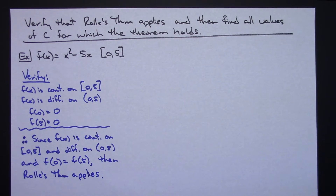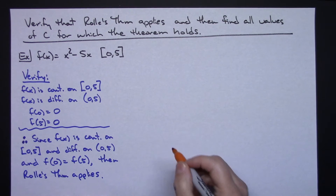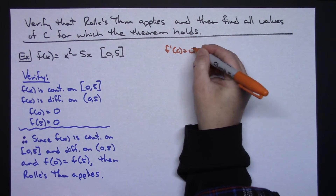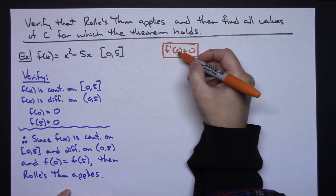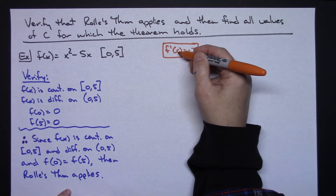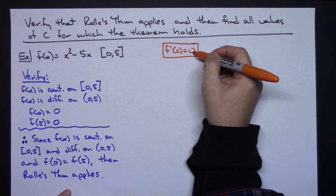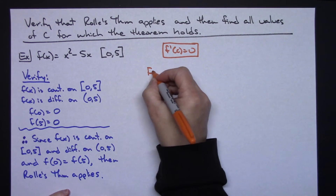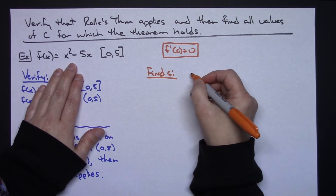The theorem says that since F of A equals F of B, there has to be at least one value C where the derivative at C equals 0. That part of the theorem tells you what to do next: find values of C where the derivative equals 0. So I'll calculate the derivative, set it equal to 0, and solve. Taking the derivative: F prime of x equals 2x minus 5.